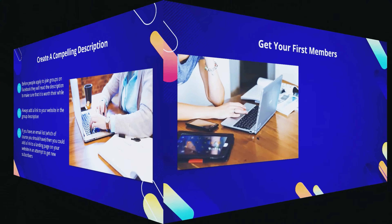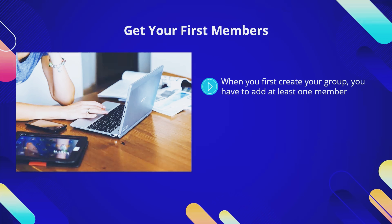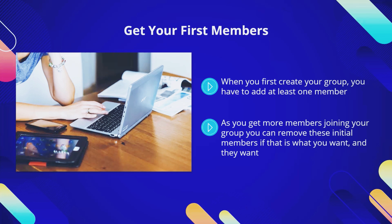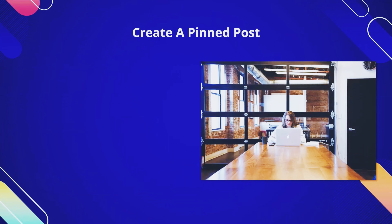Get your first members. When you first create your group you have to add at least one member — no one will want to join a Facebook group that has only one member. Talk to some of your friends and family and ask them to join before you start to promote your group. Help them out by sending them things to post and teach them to make comments and interact. We recommend that you advertise your new Facebook group on your website and tell everyone about it in your email newsletter, as well as use any of your other social profiles to get the word out.